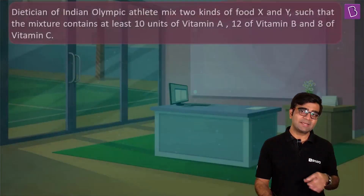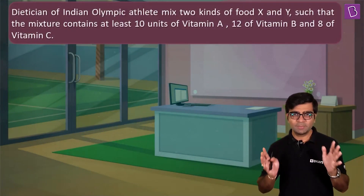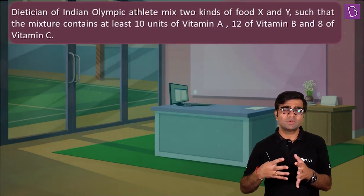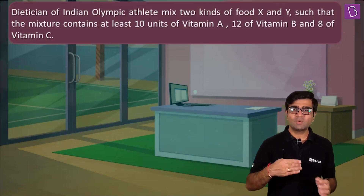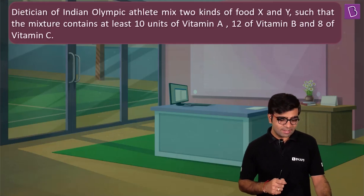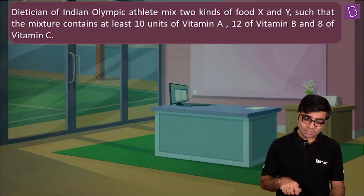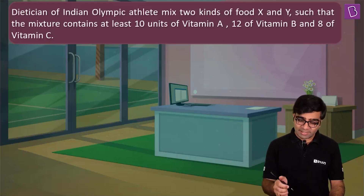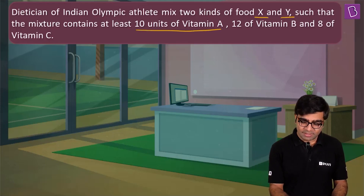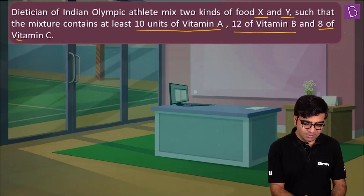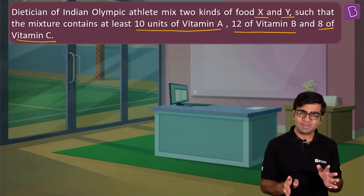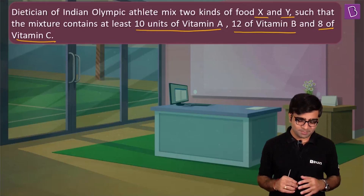Let me take you to one scenario — an Olympic situation. There is a dietitian for an Indian Olympic athlete who wants to give certain portions of proteins and vitamins. The dietitian mixes two kinds of food, x and y, such that the mixture contains at least 10 units of vitamin A, 12 units of vitamin B, and 8 units of vitamin C. They primarily want the athlete to have these three vitamins.